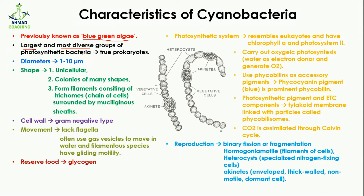Since they are bacteria, it means that they are true prokaryotes. When we talk about true prokaryotes, it means that they lack a membrane around their organelles, and their nucleic acid is present in the cytoplasm without any nuclear membrane. Their cells are 1 to 10 micrometers in diameter.